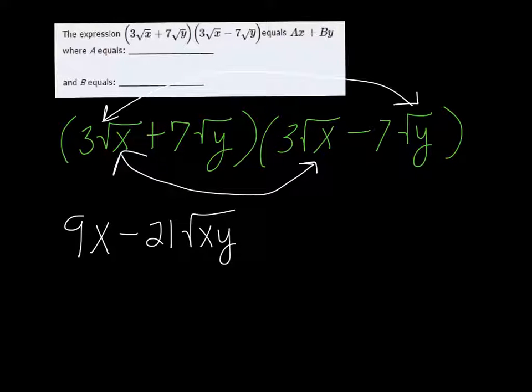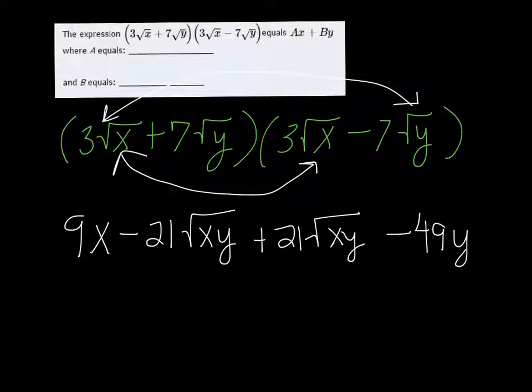The inside will be +21√xy, or yx - it doesn't matter which order. And then the last terms give -49y. 7 times 7 is 49, and root y times root y is just y.